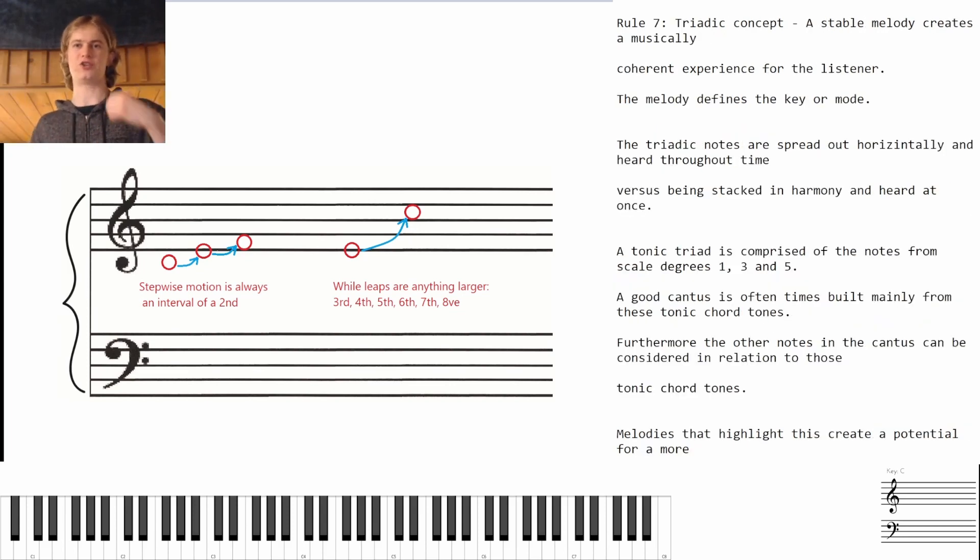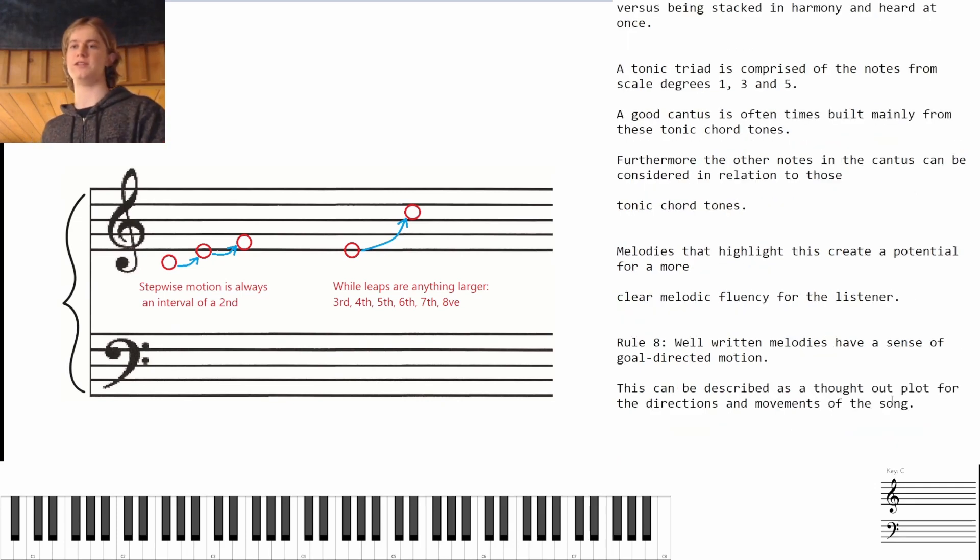Rule number seven: triadic content. A stable melody creates a musically coherent experience for the listener. The melody defines the key or the mode that you are in. The triadic notes are spread out horizontally and heard throughout time, versus being stacked in harmony and heard at once. A tonic triad is comprised of the notes from the scale degrees one, three, and five, or in C major, C, E, and G. A good cantus is oftentimes built mainly from these tonic chord tones. The other notes in the cantus can be considered its relationship to those tonic chord tones.